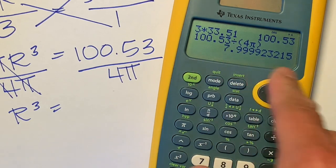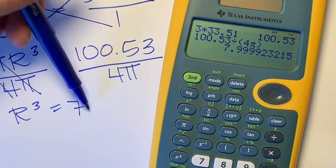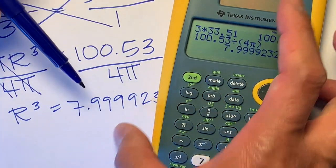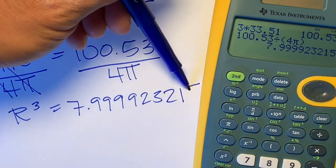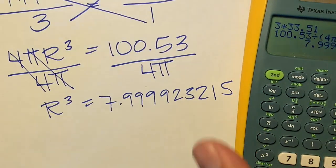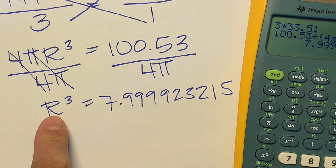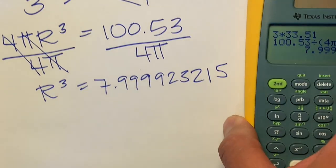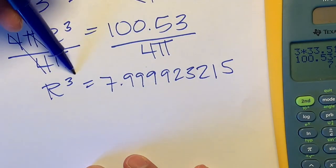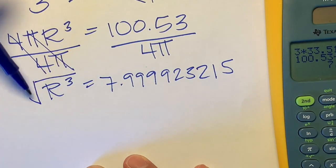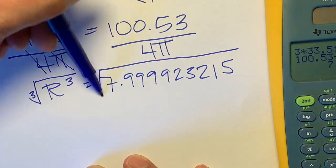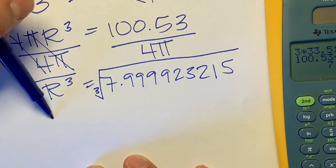And then you'll get this number: 7.999923215. So we're not done yet. We want to get rid of this cube. The opposite of cubing something is cube rooting, so we're going to draw this radical symbol with a little 3 for the cube root. We're going to do the same thing, find the cube root of that.